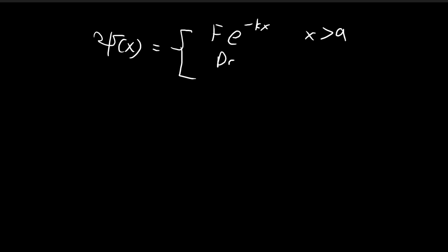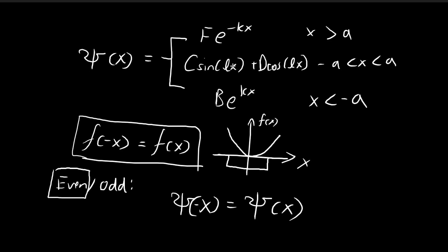Within the interval -a to +a, ψ(x) = D·cos(lx). What I've changed is that I've taken away the sine term, because the sine term is an odd function. Cosine, on the other hand, is an even function, because cos(-x) = cos(x). Because we are requiring ψ(x) to be an even function, we can just take away the odd sine term and keep the cosine term.